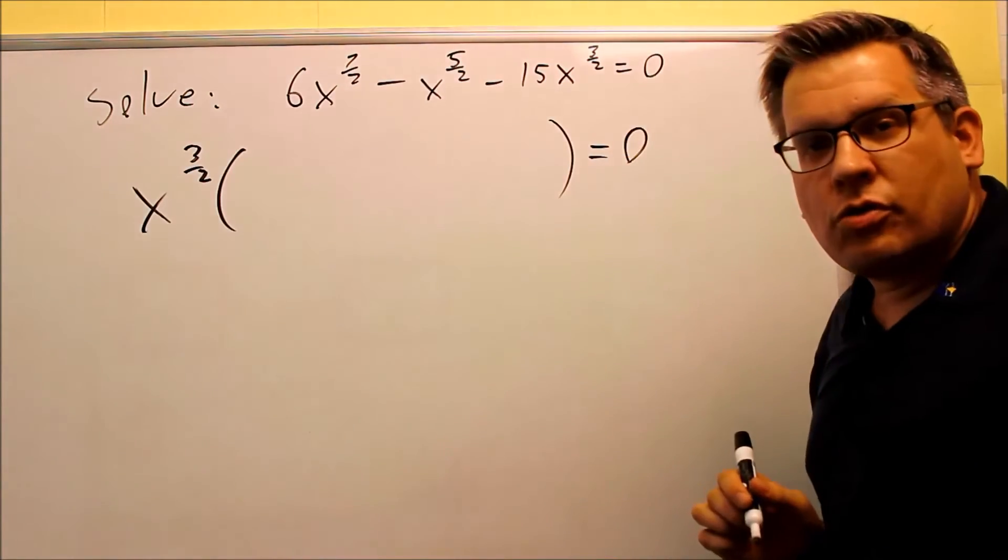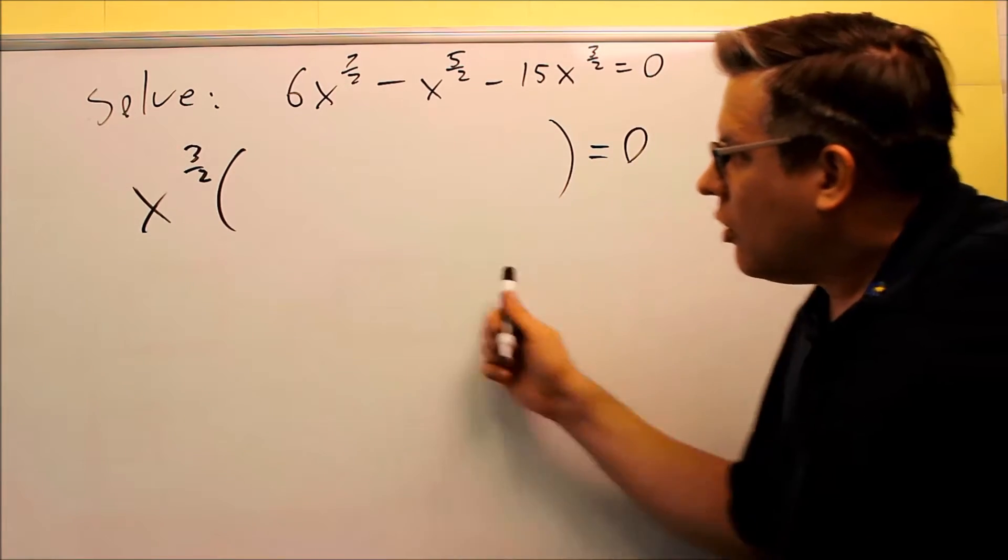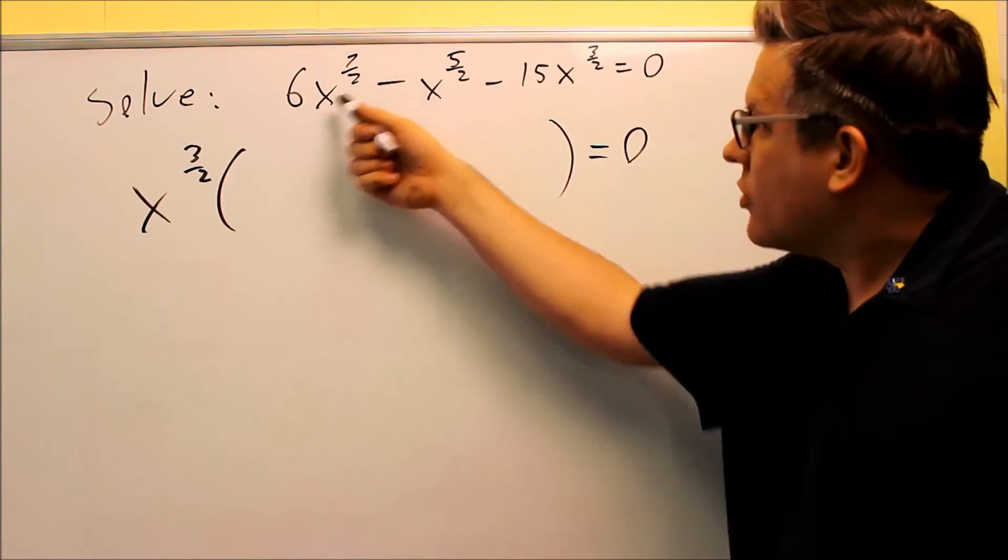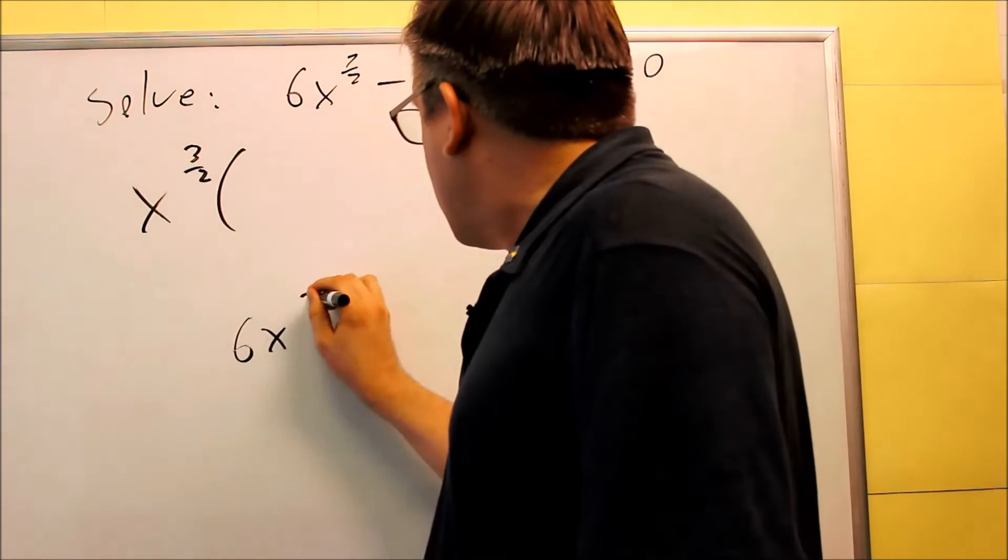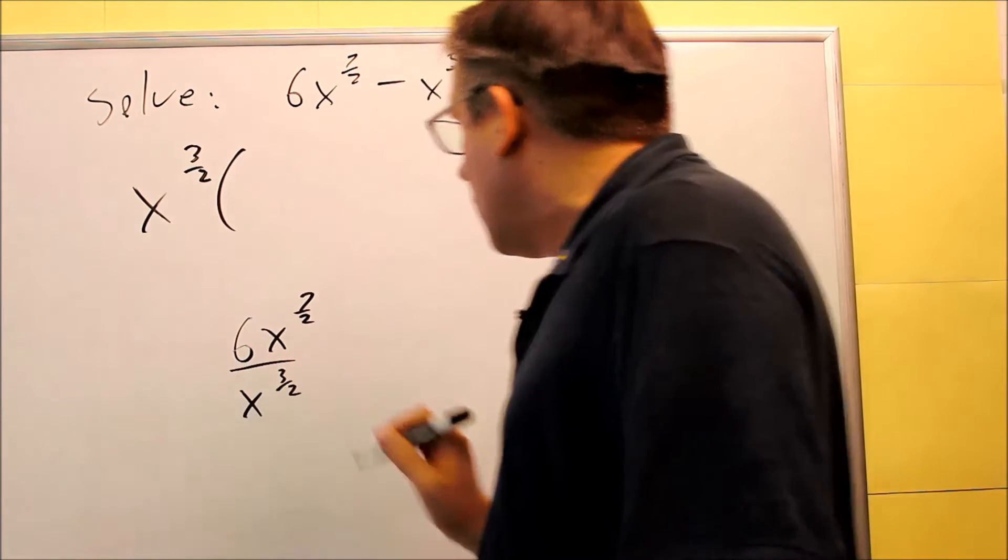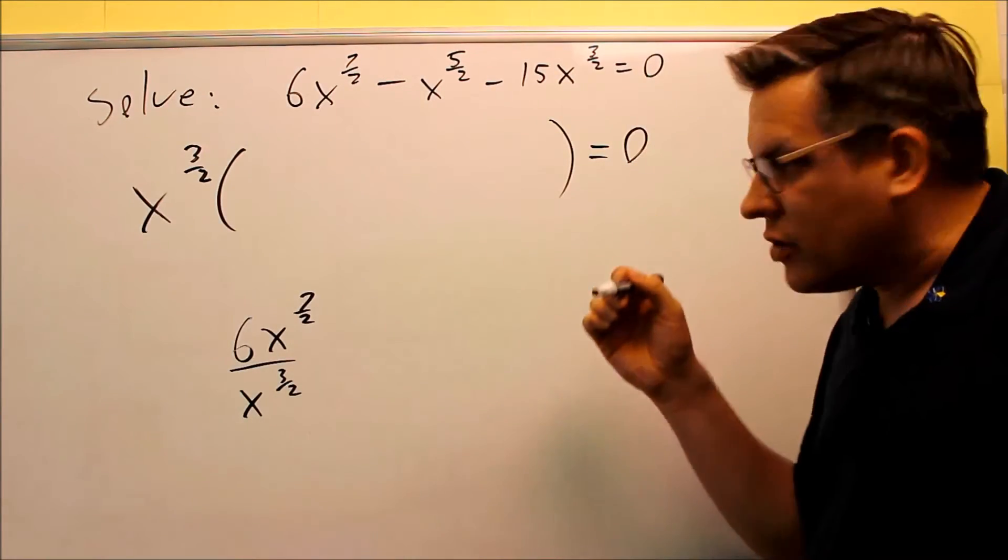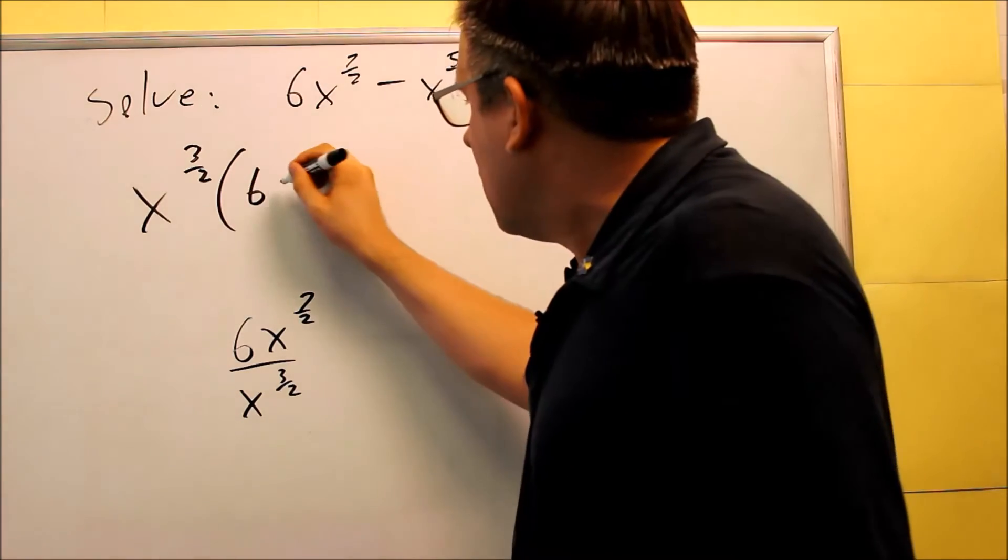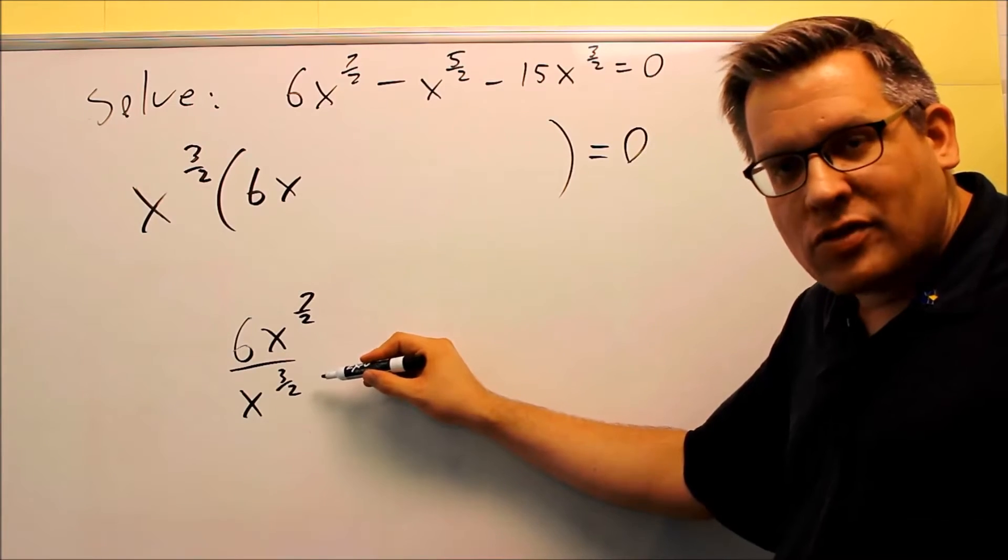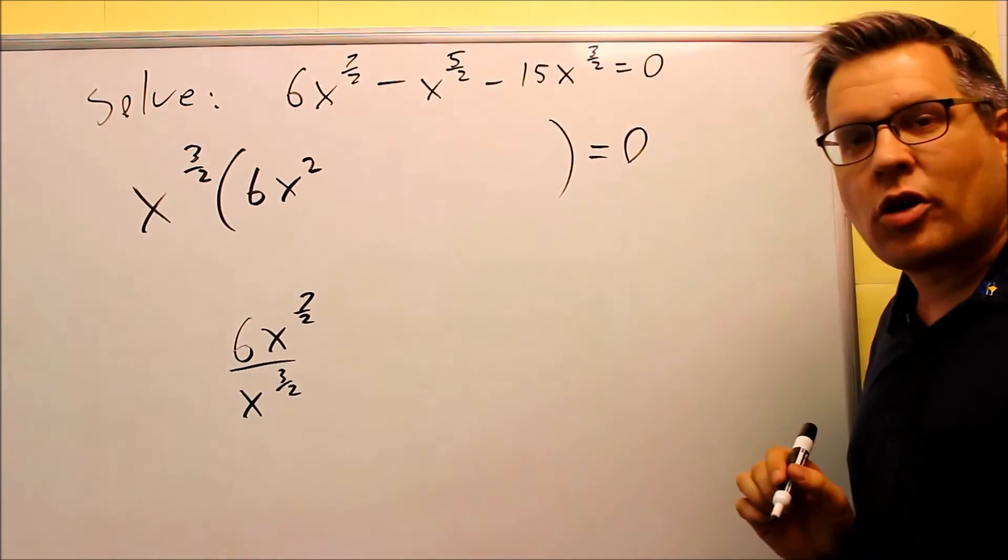Now, the part that goes in here, how do we figure out what that's going to be? Well, when you do a factoring step and you take something outside, what you're really doing is division. So you can think of this as the first term, because we're pulling out x to the three halves, you can think of it as doing this. And so then if I work this out, you're subtracting exponents here. You're still going to have the six. And then with the x, you have seven halves minus three halves. That's going to give you four halves, and four halves is two, which means now I know I've got to have an x squared on the inside.